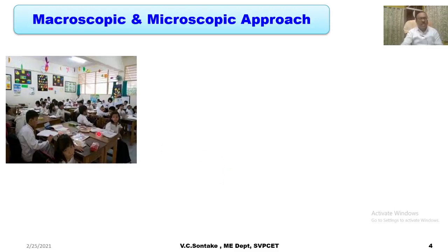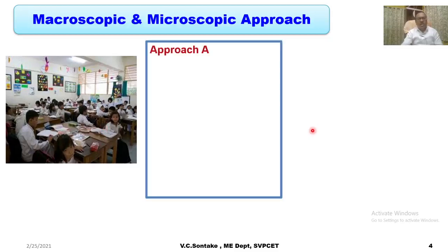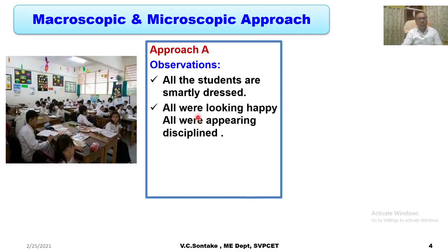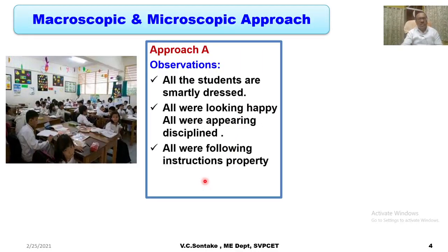Let us take the example of a classroom which an observer wants to study. In approach A, the observer comes to the classroom and notes down the following observations: number one, all the students are smartly dressed; number two, all were looking happy; and all were appearing disciplined and following instructions properly.